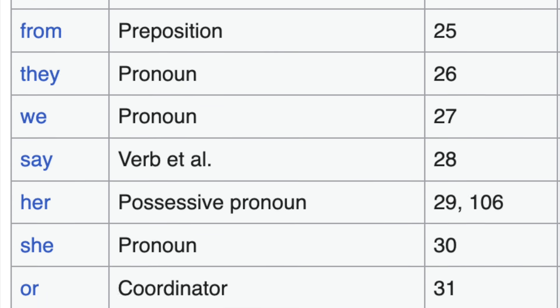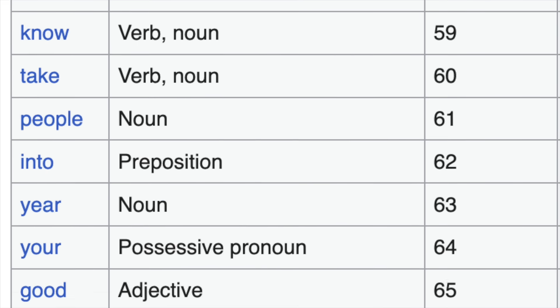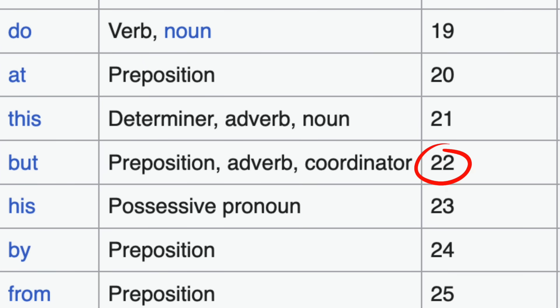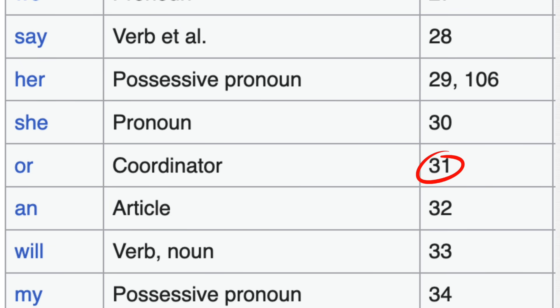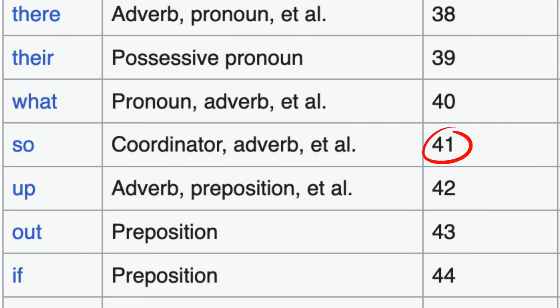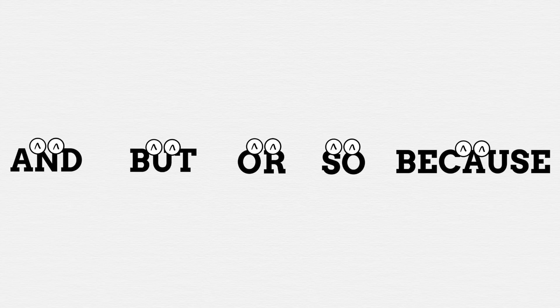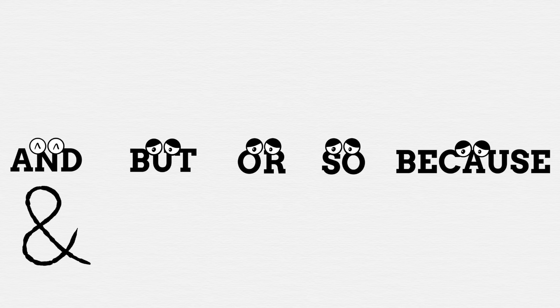The other four words all appear in the top 100 most used words too, with 'but' at 22, 'or' at 31, 'so' at 41, and 'because' at 94. Make no mistake about it, this little group of words are some of the most commonly occurring in our language, yet only one of them has acquired a neat little symbol for itself.